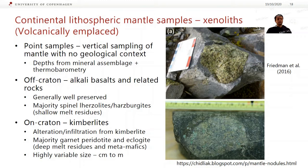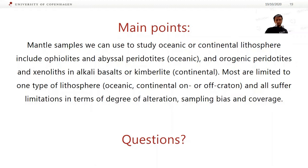A lot of these are garnet peridotites and eclogites, which are interpreted as deep residues of melting and metamorphosed mafic rocks. You get a pretty variable size — some of these are just down to a little centimeter chunk; some of them can be, I think, the biggest are up to about a meter across, which is pretty massive for a xenolith.